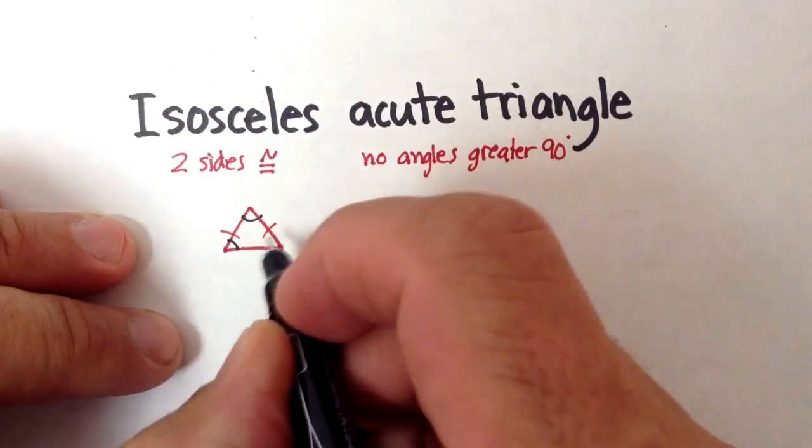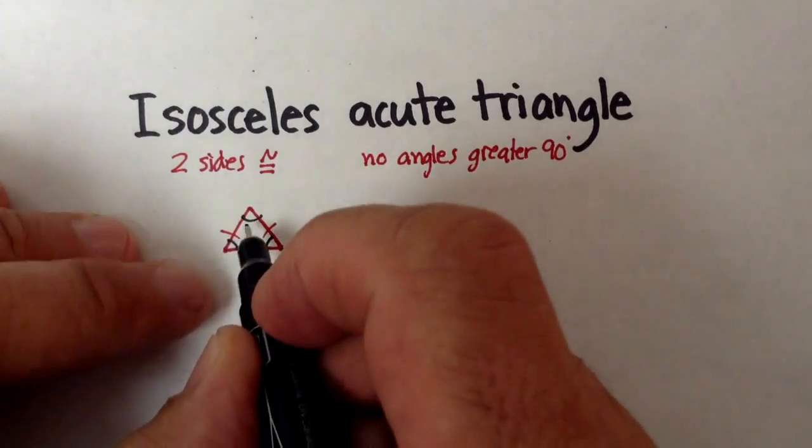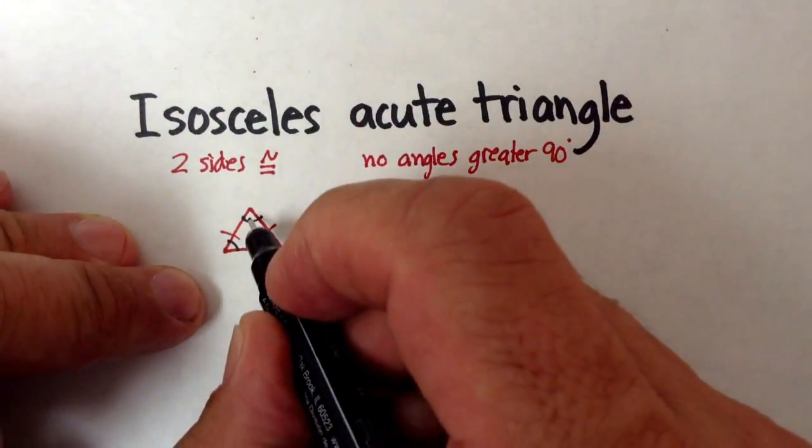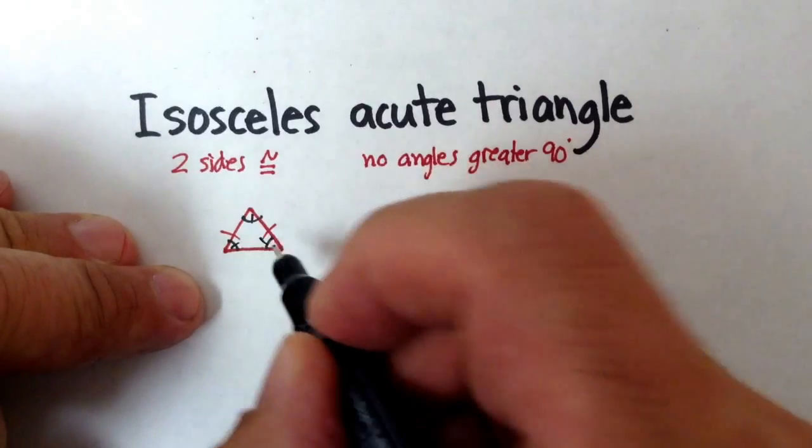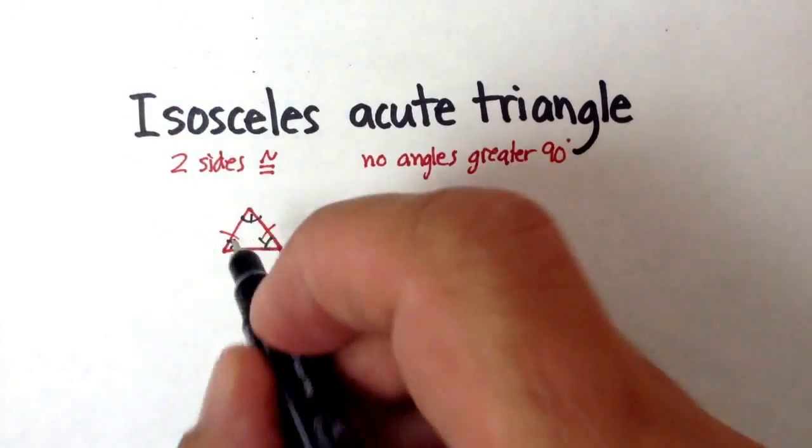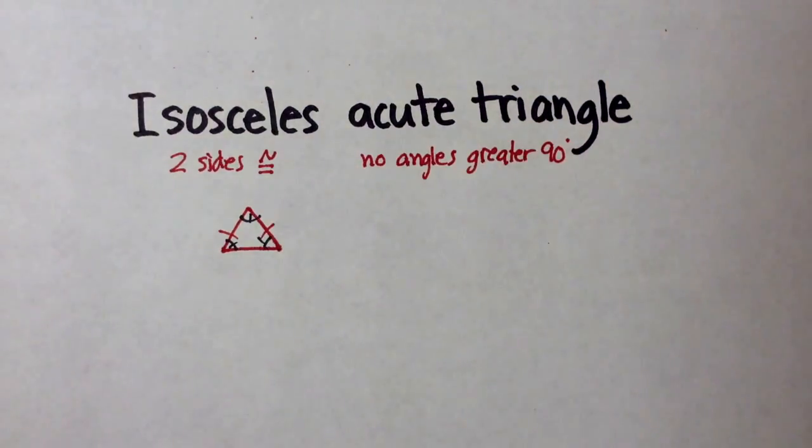It's not quite 90. The angles don't have to be equal, although in this particular case, it kind of looks like they are. Actually, I don't have to put those in there. Anyway, I hope that was helpful. Just remember the different kinds.